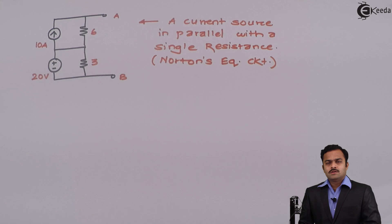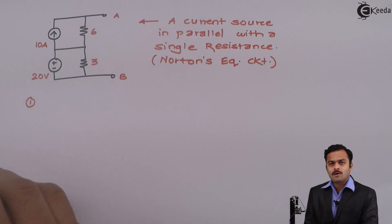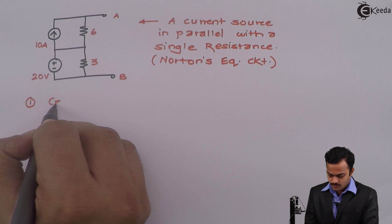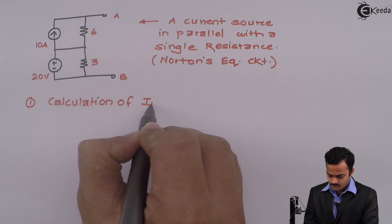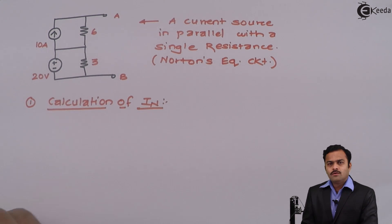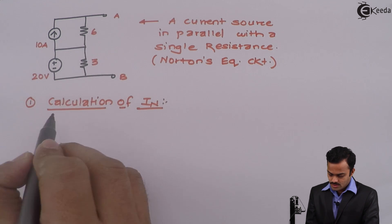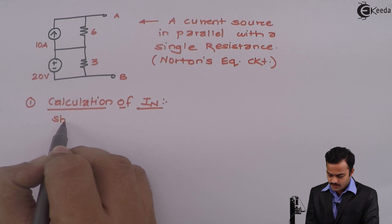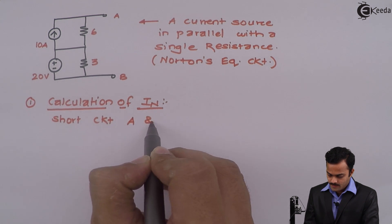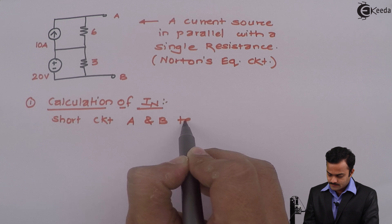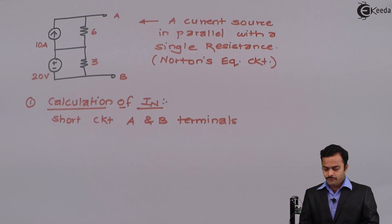So let's follow the procedure. Step number one: calculation of In. For this I need to close these two terminals by a link, so I will write short circuit A and B terminals.